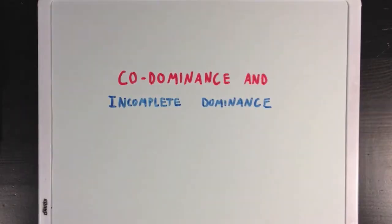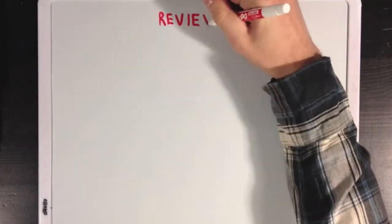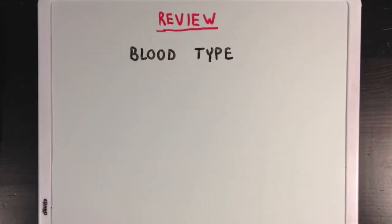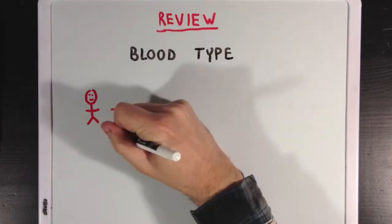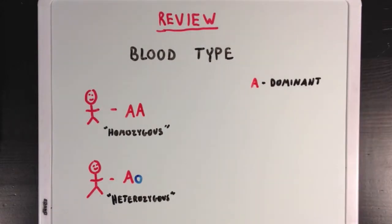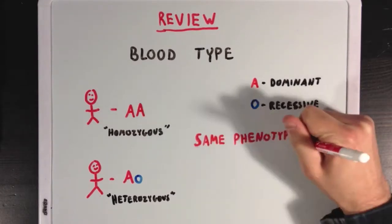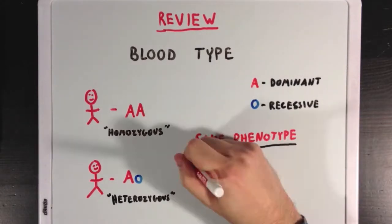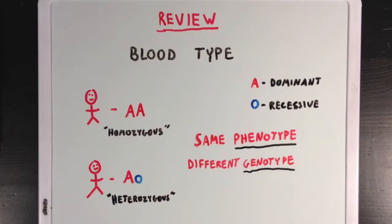Today we're going to talk about codominance and incomplete dominance. But first, let's review the example of blood type, and how someone with the same two alleles coding for the same trait would be called homozygous, and someone with different alleles would be called heterozygous. Also remember dominant and recessive alleles, and how the A allele is dominant over the O allele — meaning the same phenotype, blood type A, can result from two different genotypes.